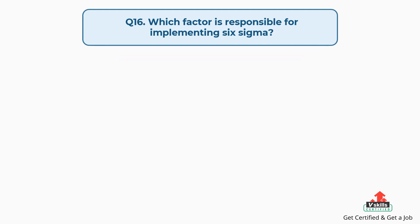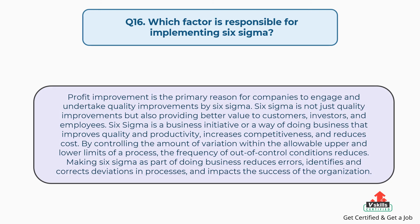Question number sixteen: Which factor is responsible for implementing Six Sigma? Profit improvement is the primary reason for companies to engage in quality improvements through Six Sigma. Six Sigma is not just quality improvement but also provides better value to customers, investors, and employees. It is a business initiative that improves quality and productivity, increases competitiveness, and reduces cost. By controlling the amount of variation within the allowable upper and lower limits of a process, the frequency of out-of-control conditions reduces. Making Six Sigma part of doing business reduces errors, identifies and corrects deviations in processes, and impacts the success of the organization.